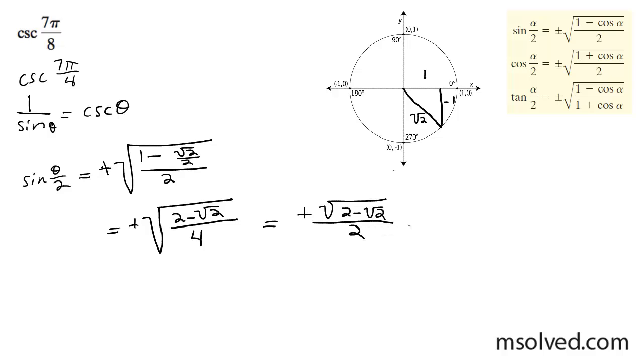And because this is still in the form of the half angle for the sine, I need to get it in cosecant form, so I'm just going to reciprocate it. And finally, we're going to get cosecant of 7π over 8 is equal to 2 over the square root of 2 minus root 2. And I'm just going to leave it in radical form there.